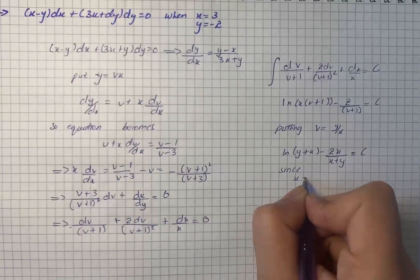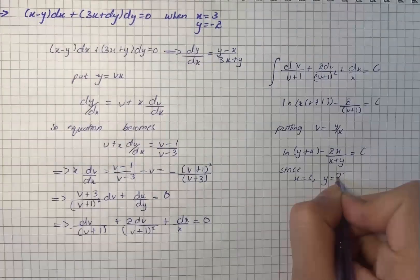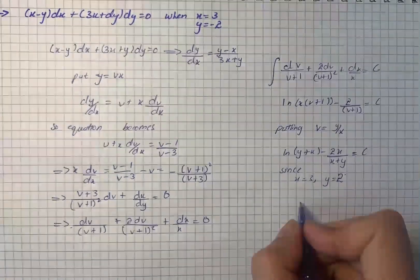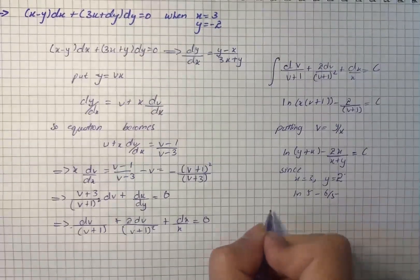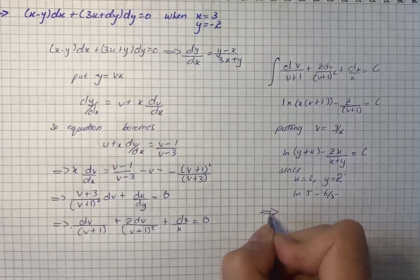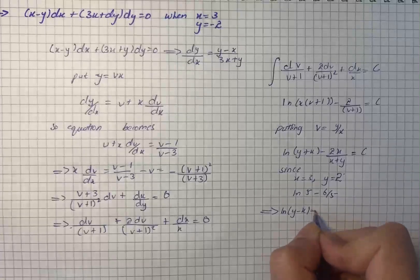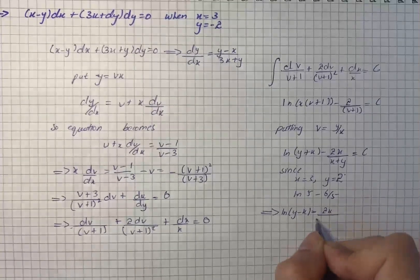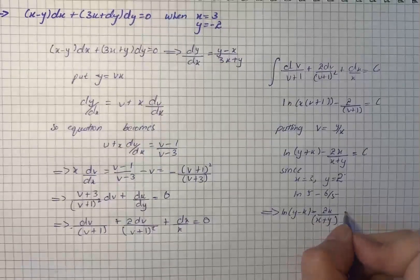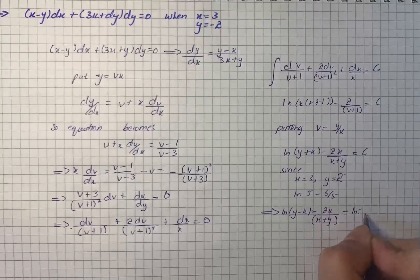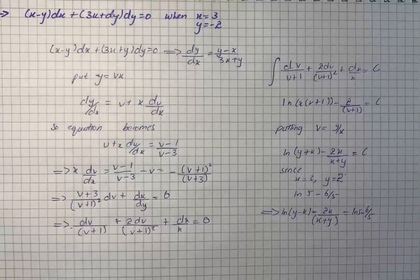From the initial conditions x equals 3 and y equals 2, we get log 5 minus 6 over 5. So the solution for the equation is the natural log of (y plus x) minus 2x over (x plus y) equals log 5 minus 6 over 5. That is our solution for the given equation.